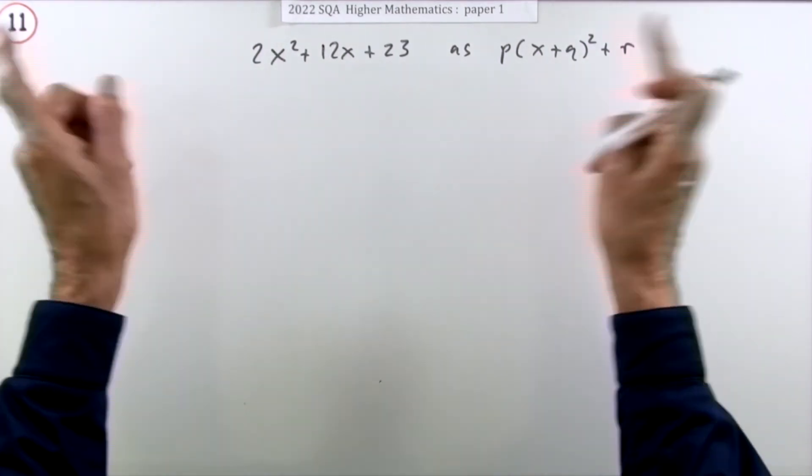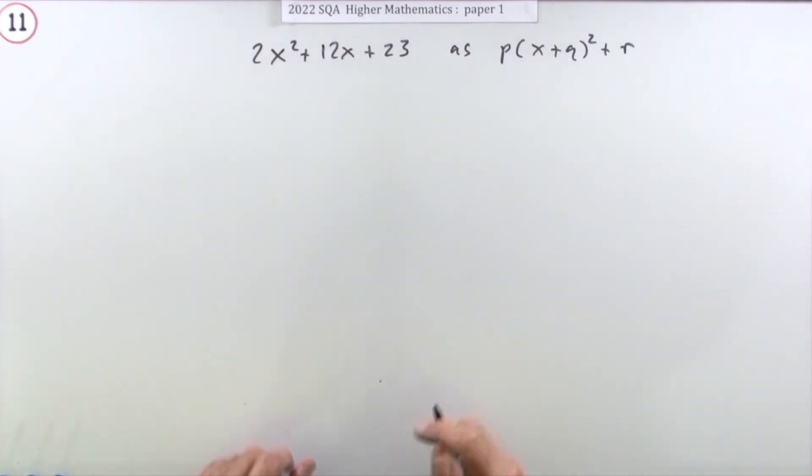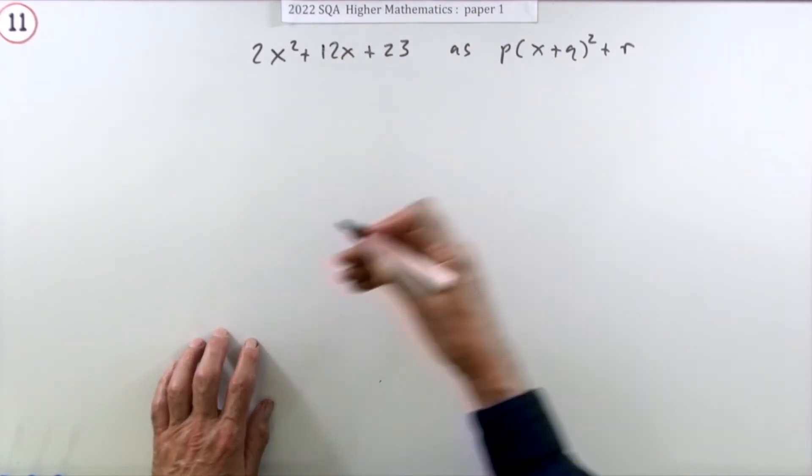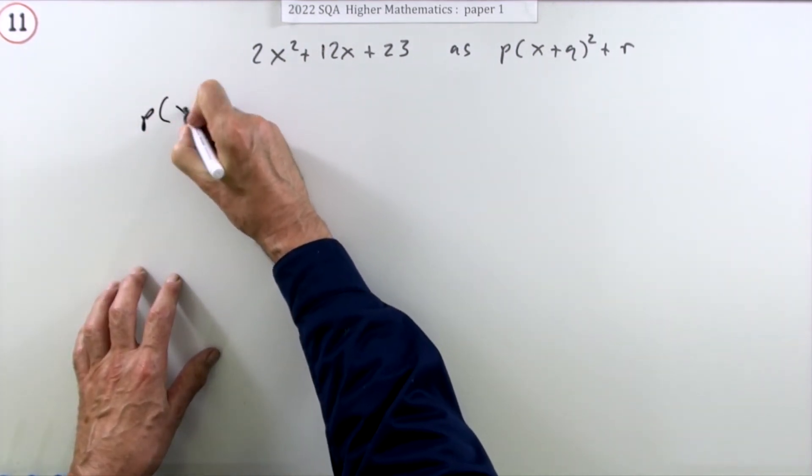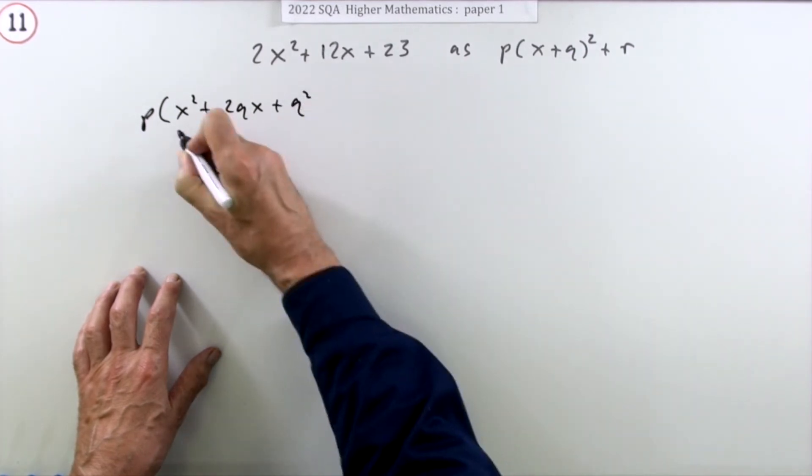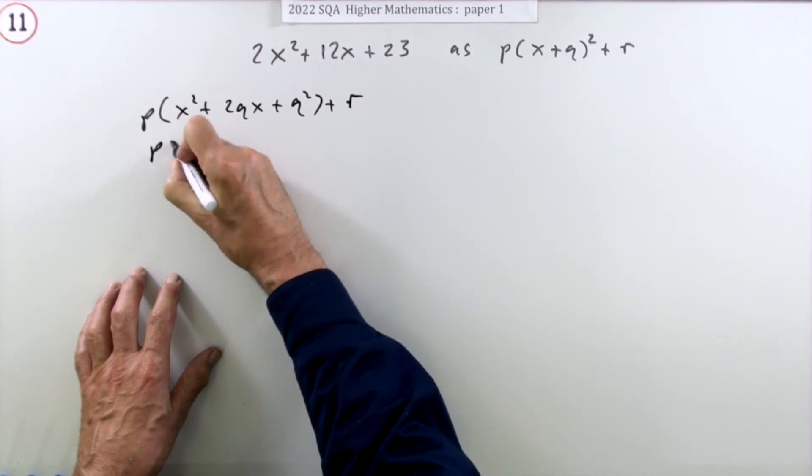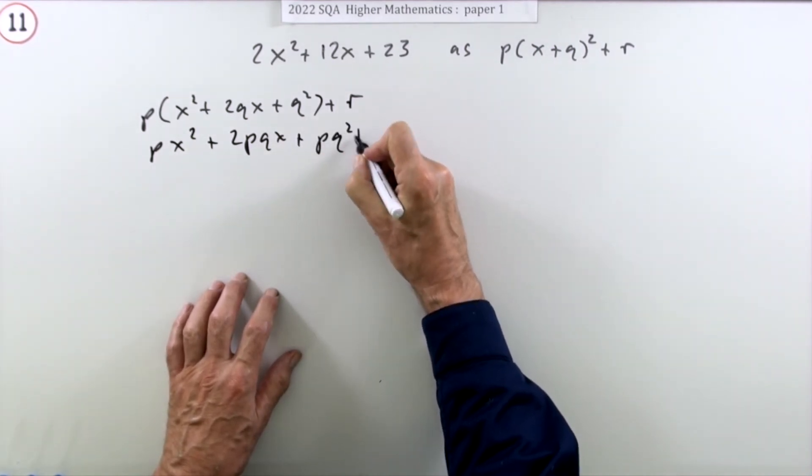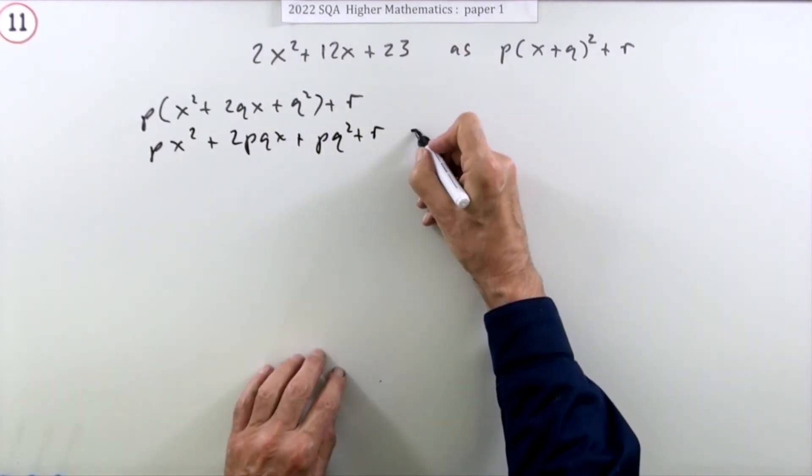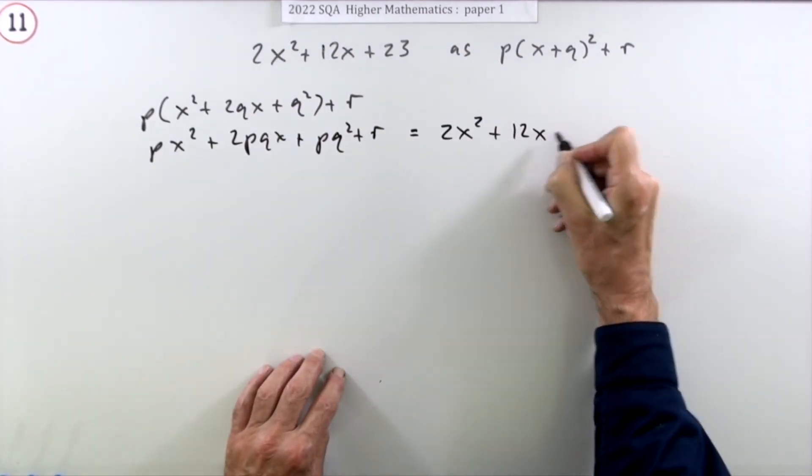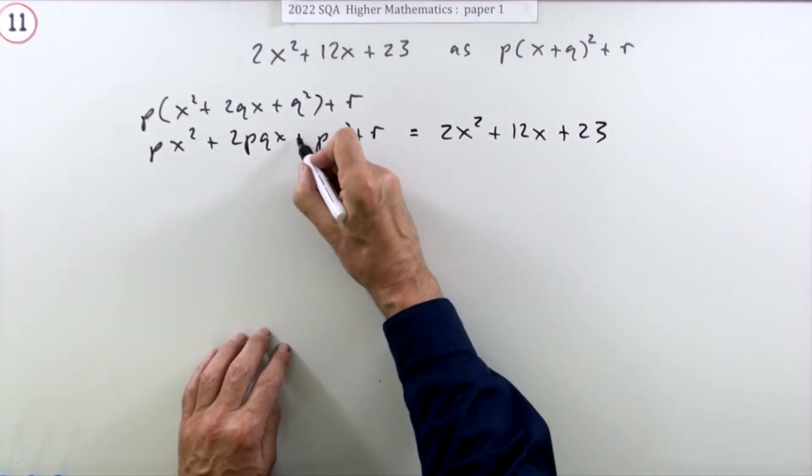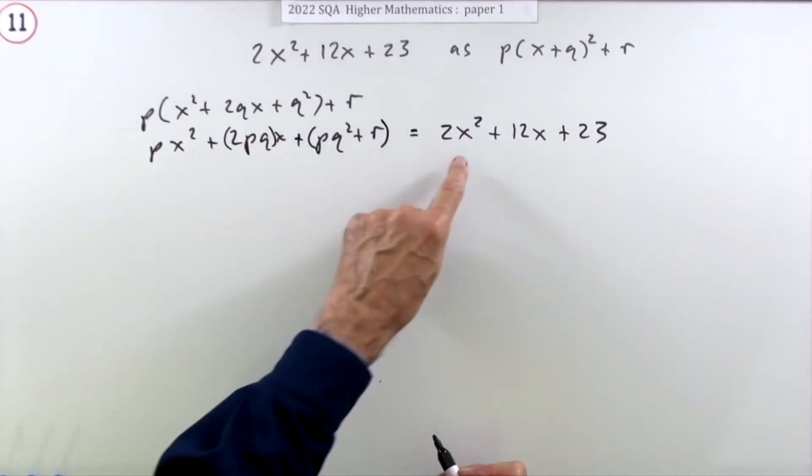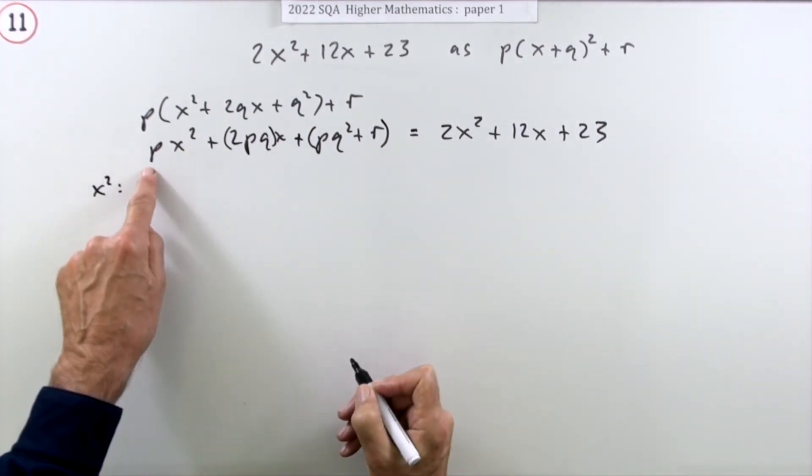Now the algebraic technique, which doesn't involve all the arithmetical gymnastics, involves just expanding this and equating it to this term by term. So if you were to expand the required form of the expression, you would have p(x² + 2qx + q²) - square the first, square the last, twice the product - plus the r. So that's px² + 2pqx plus pq² + r. Now that's to be the same as 2x² + 12x + 23. I'll just identify the parts by putting these in brackets.